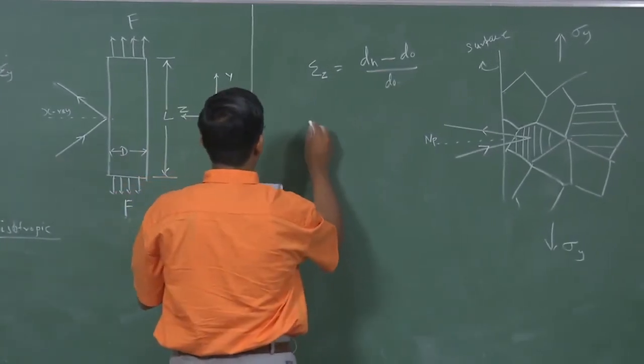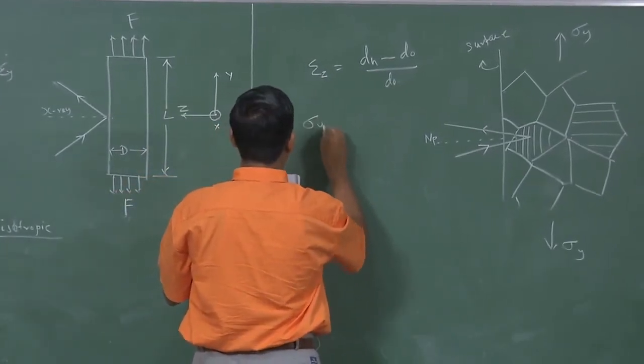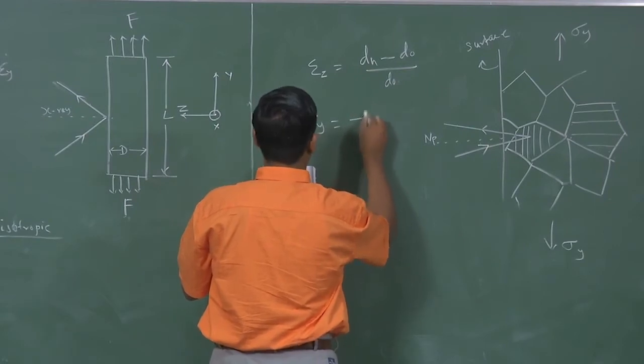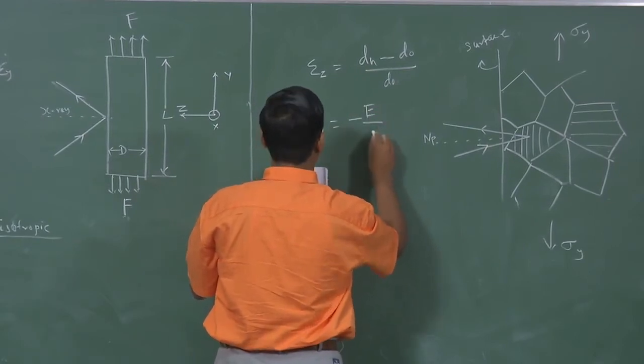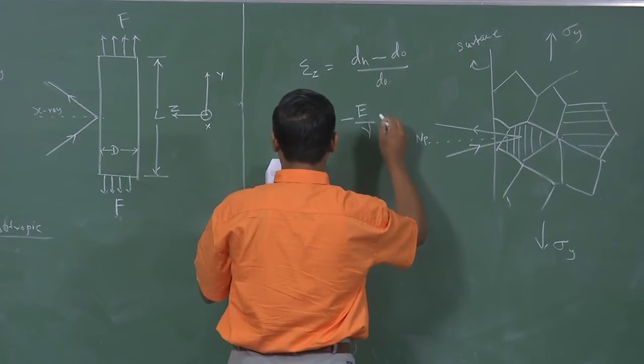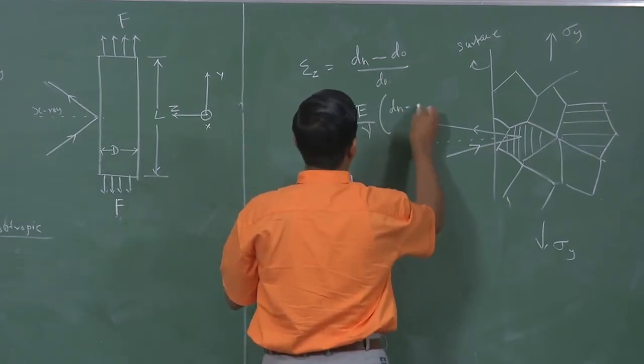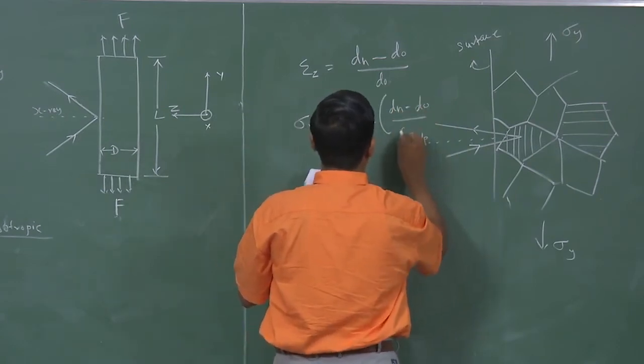That is the difference. So we can write sigma y equals minus E divided by mu where Dn minus D0 by D0.